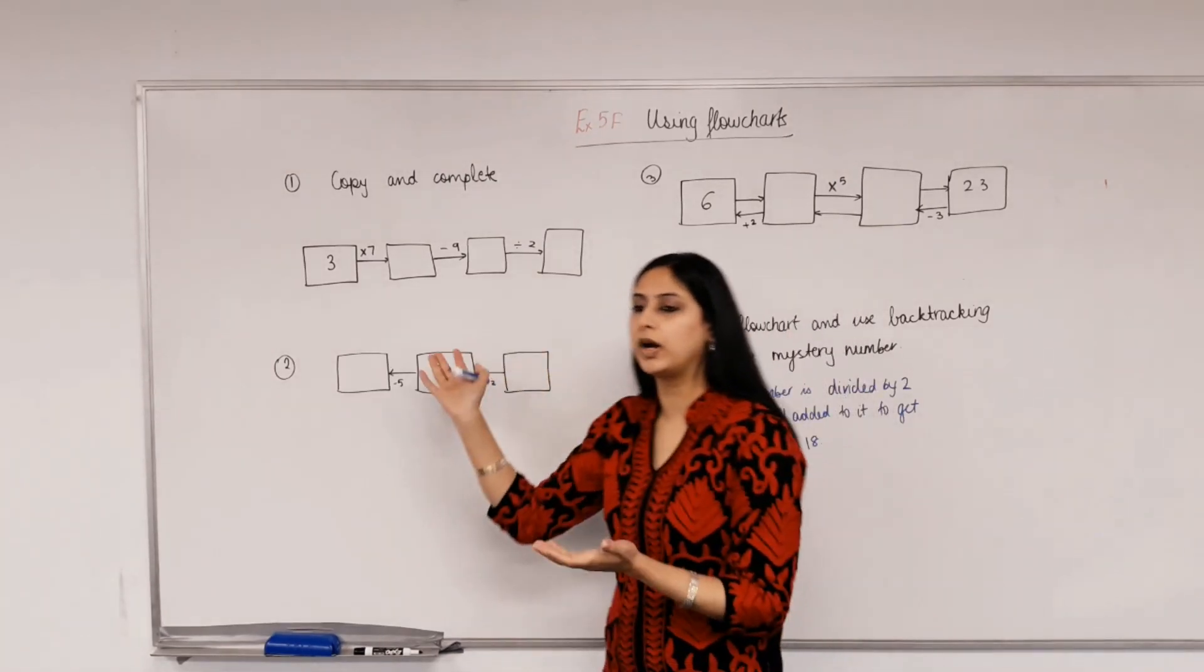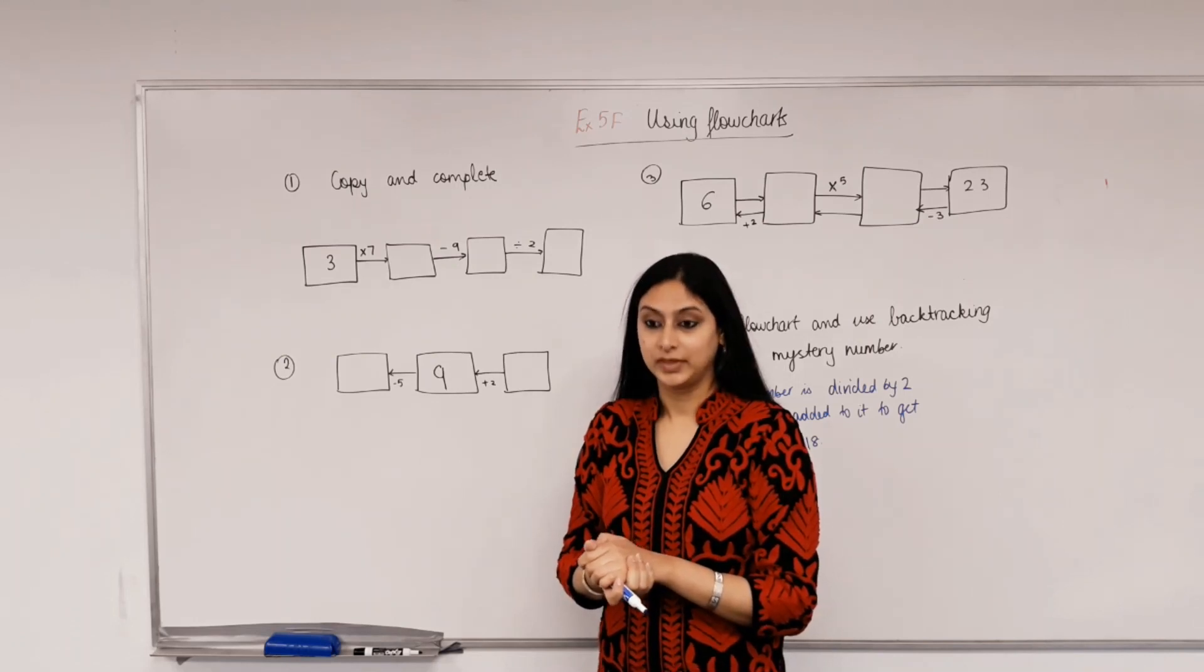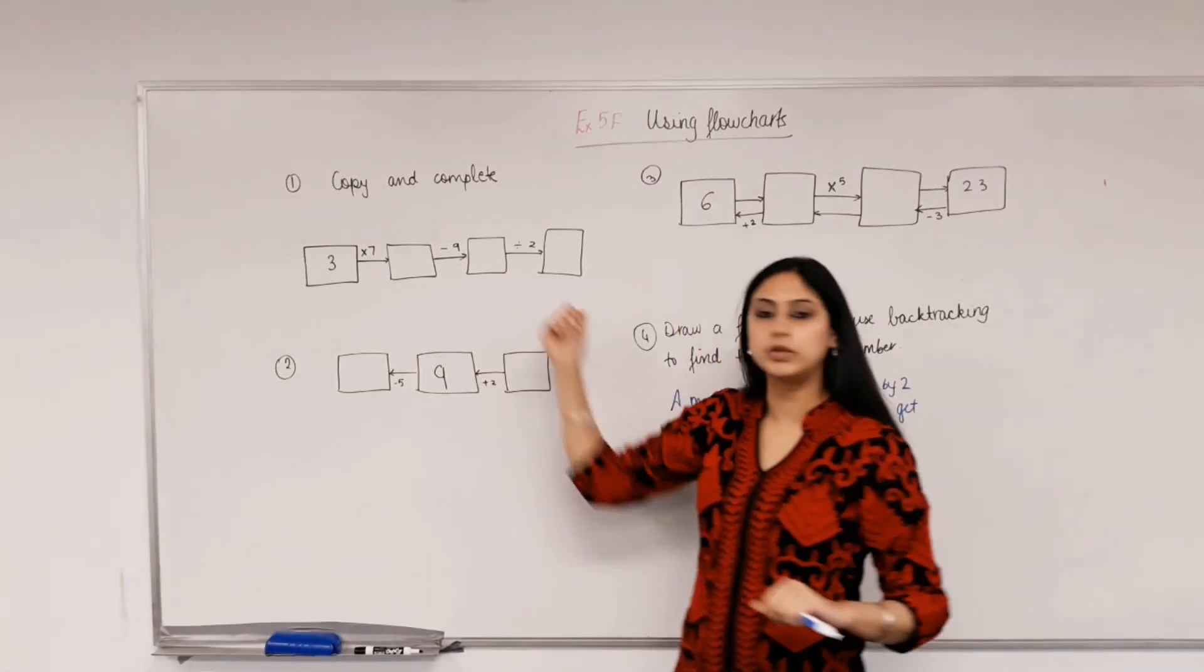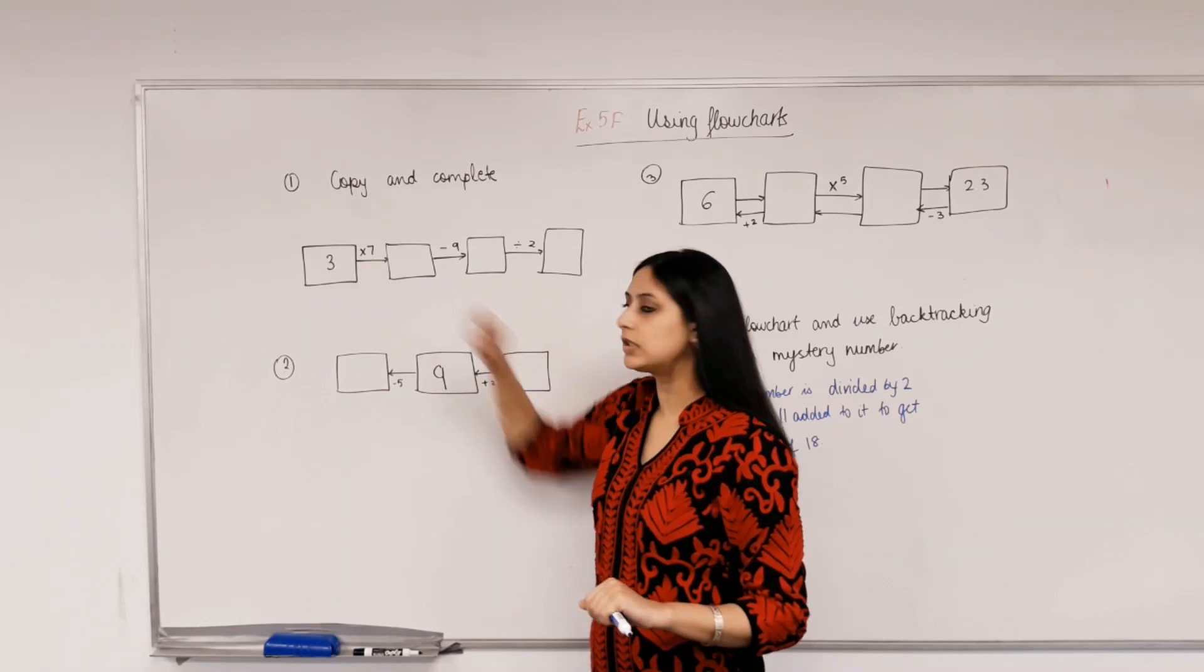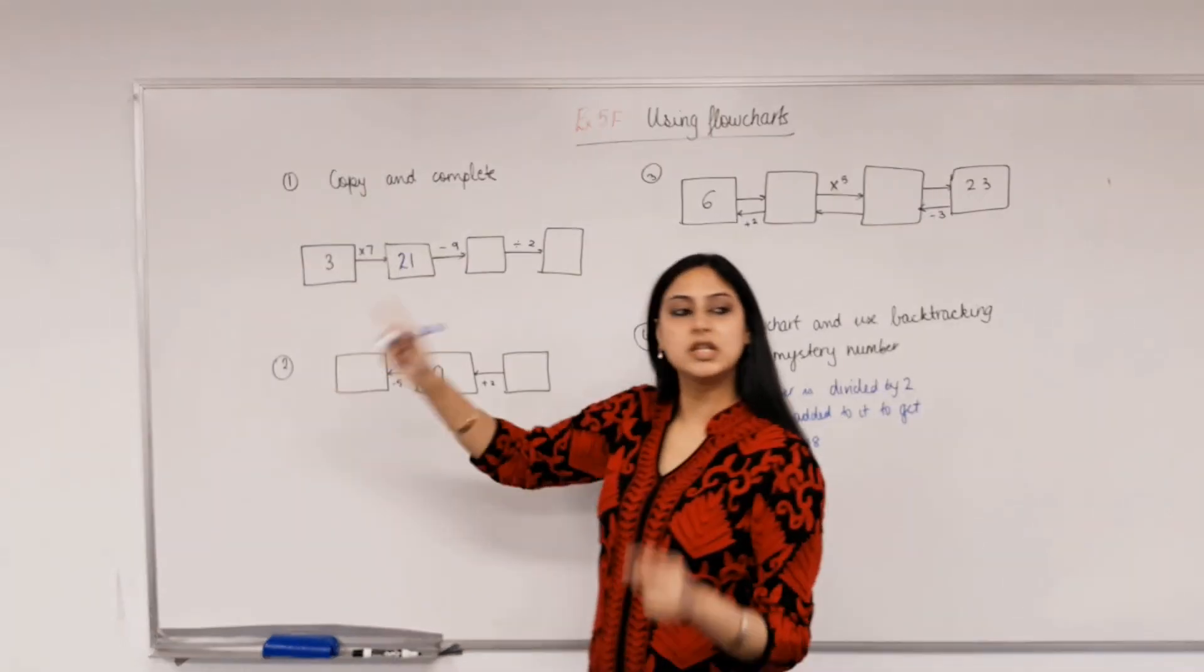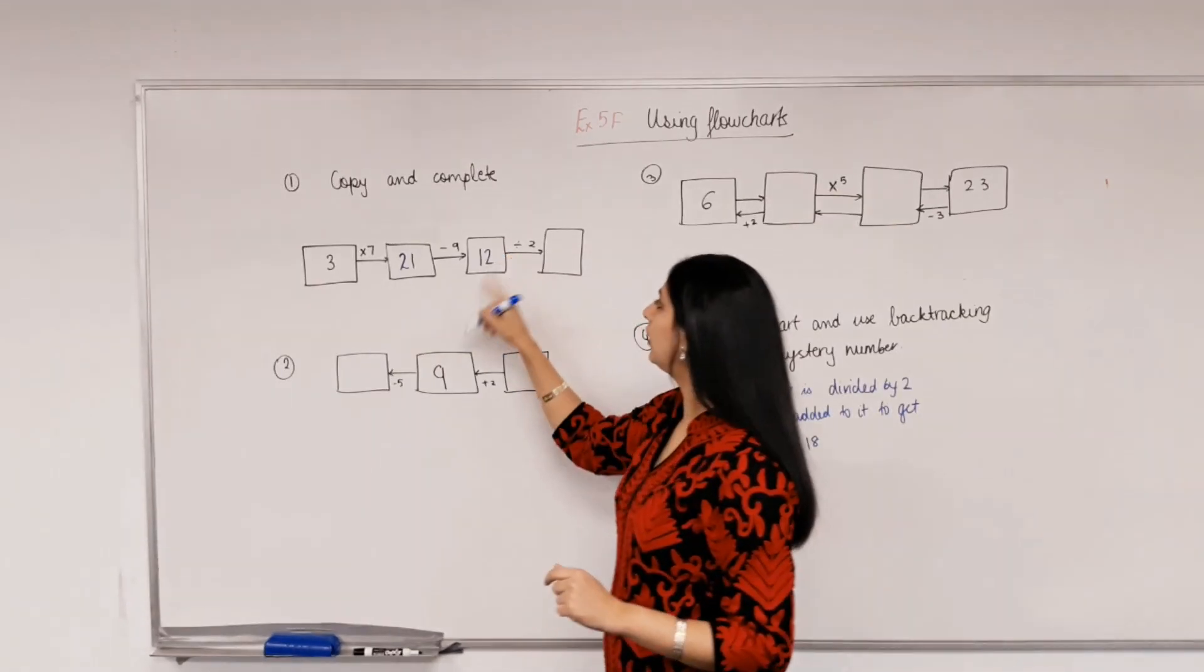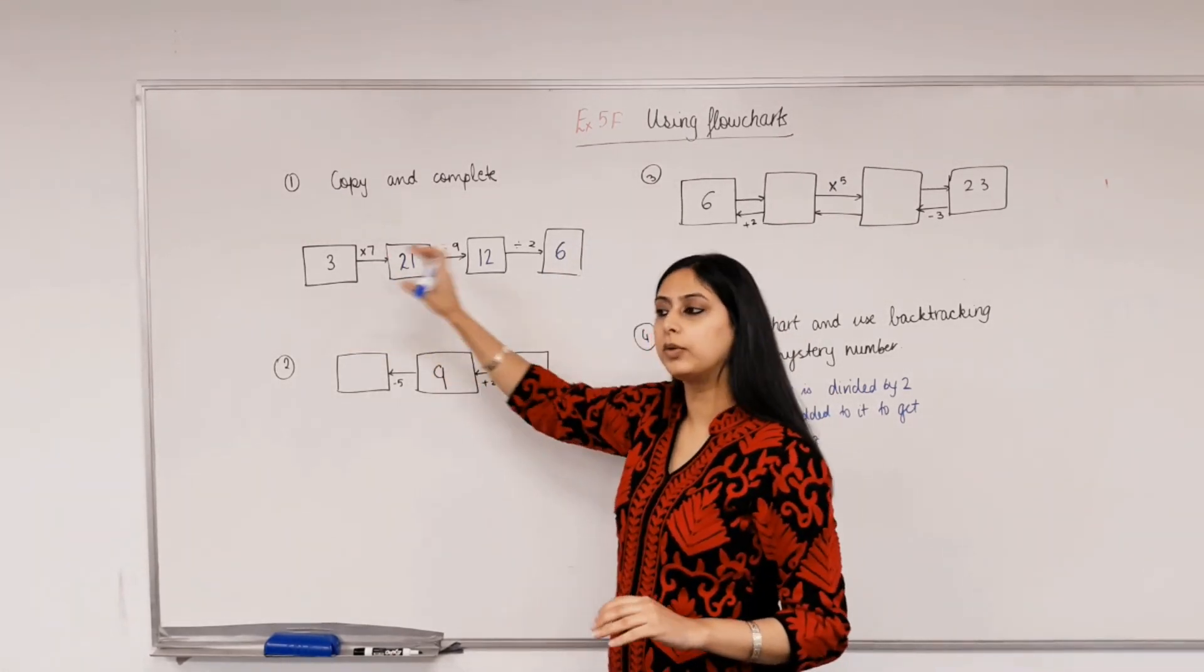So this is a flowchart. Why is that a flowchart? What's happening in here? It's flowing through from one direction to the other. Can you see the direction? And are there some sets of instructions that you have to follow to get from the starting number to the end number? Okay. So what's my starting number here? What am I instructed to do to it? Times by 7. So 3 times 7 is 21. What's the next step that I have to follow? Take away 9. What's 21 take away 9? 12. And then what's 12 divided by 2? 6. So we got 6 from the input number 3 by following a set of instructions.